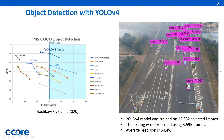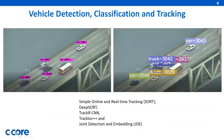On the right, you can see an example with the detection results. In addition to detection shown on the left, YOLO version 4 can also classify different types of vehicles, such as car, truck, and bus.